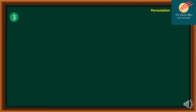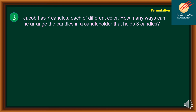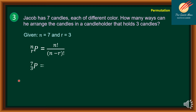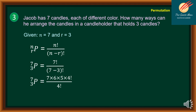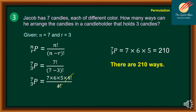In the previous example we took all objects at a time. In number three, Jacob has seven candles, each of a different color. How many ways can he arrange the candles in a candle holder that holds three candles? The total number of candles is seven and we take three at a time, so we use nPr equals n factorial over (n minus r) factorial. Substituting, we have 7 factorial over (7 minus 3) factorial, which simplifies to 7 times 6 times 5 times 4 factorial over 4 factorial, giving us 7 times 6 times 5, equal to 210. Therefore, there are 210 ways.